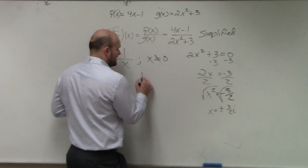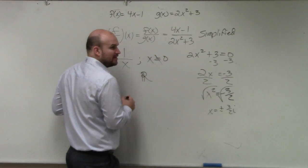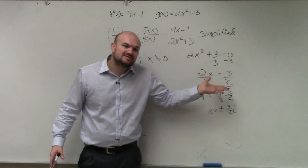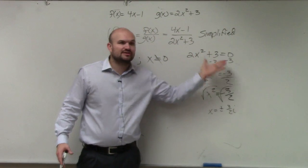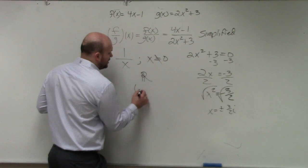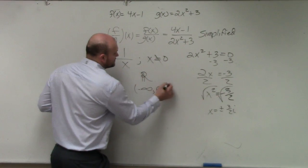So therefore, the domain is simply going to be all real numbers. Even though we look to find the restrictions, there's no restrictions under the real number system. There would only be restrictions under the imaginary number system. So the domain would be all real numbers, or negative infinity to positive infinity.